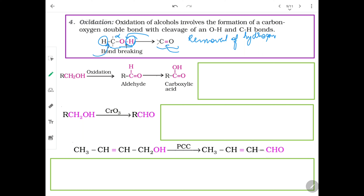So it becomes a carbonyl compound — meaning aldehyde or ketone. Now see the example: this is a primary alcohol, directly connected with one carbon. On oxidation of primary alcohol, one hydrogen is removed from the OH and another from the alpha carbon. So the C-H becomes C, and the O-H loses H to become C=O — a carbonyl compound, that is aldehyde. So primary alcohol on oxidation gives aldehyde.